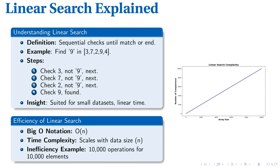The key to understanding a linear search lies in its simplicity. In this method, each item in a dataset is sequentially checked until a match is found, or all possibilities are exhausted. Consider the quest to find 9 in the array 3, 7, 2, 9, 4.